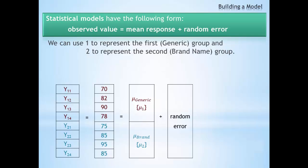Statisticians typically make the model more inclusive. So instead of using mu G for the generic group, we use a 1 to represent the first group and 2 to represent the second group. Certainly, generic could be mu 2 and brand could be mu 1, but the point is we are just using numbers instead of letters so that it could represent any potential set of two groups of data.